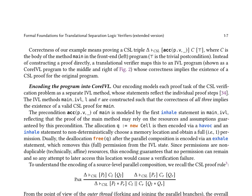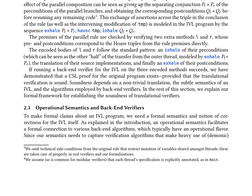Dually, the deallocation free(Q) after the parallel composition is encoded via an exhale statement, which removes this full permission from the IVL state. Since permissions are non-duplicable — technically, of fine resources — this encoding guarantees that no permission can remain, and so any attempt to later access this location would cause a verification failure.